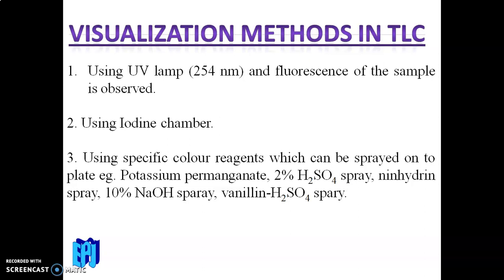The second technique is the iodine chamber: place the developed plate in a chamber containing iodine vapor. The iodine adsorbs onto the components, producing brown spots. The third technique is spraying color reagents, such as potassium permanganate spray, 2% H₂SO₄ spray, or 10% NaOH spray, which make the components visible as colored spots.